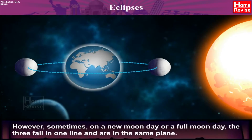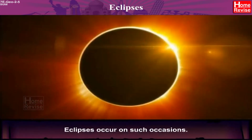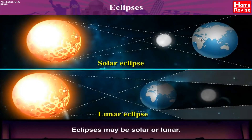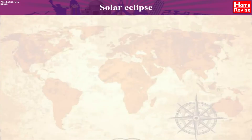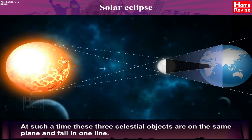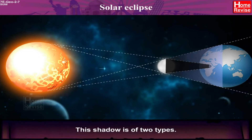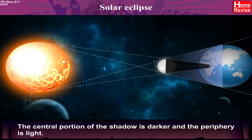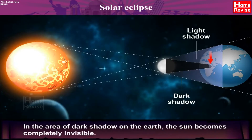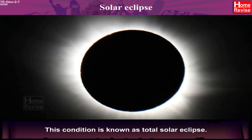However, sometimes on a New Moon day or a Full Moon day, the three fall in one line and are in the same plane. Eclipses occur on such occasions. Eclipses may be solar or lunar. Solar Eclipse: If the Moon is between the Sun and the Earth, the shadow of the Moon falls on the Earth. At such a time, these three celestial objects are on the same plane and fall in one line. Hence, the place on the Earth where the Moon's shadow falls experiences a solar eclipse. This shadow is of two types — the central portion of the shadow is darker and the periphery is lighter. In the area of dark shadow on the Earth, the Sun becomes completely invisible. This condition is known as Total Solar Eclipse.